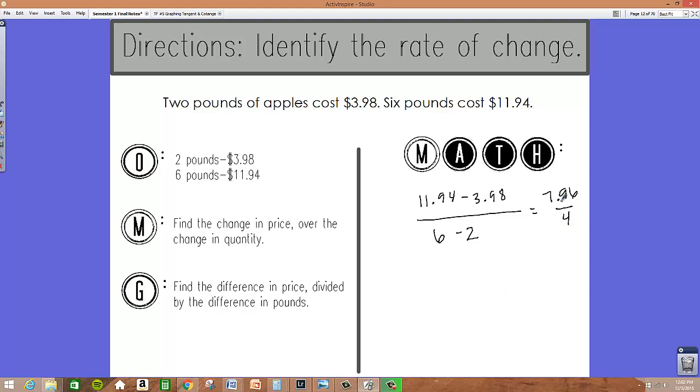When we go through and divide $7.96 by four we're left with $1.99. So our rate of change for this word problem is that it costs $1.99 per one pound.